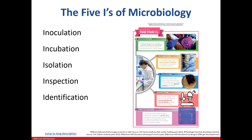These are the five major I's we will be focusing on. Inoculation involves taking various samples or microbes and placing them on various types of media. Incubation involves placing our inoculated samples in specific conditions. Isolation is a process used to obtain one particular microbe from a mixed sample. Inspection utilizes microscopes as well as visual examination. And finally, identification uses various techniques to identify an organism to their species level.